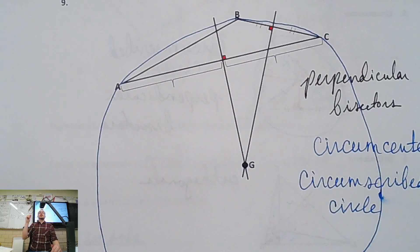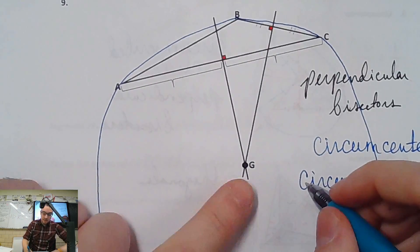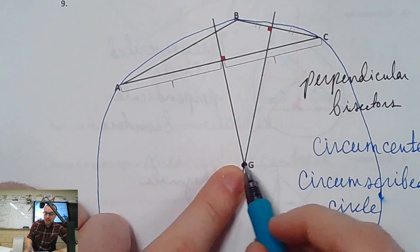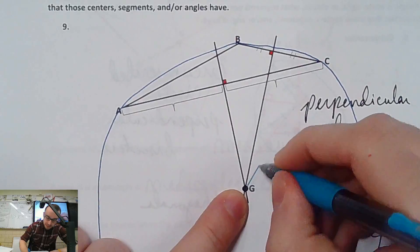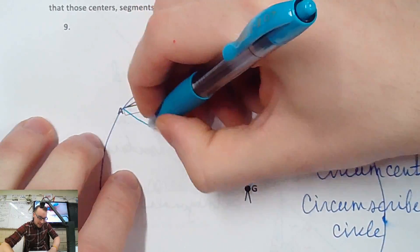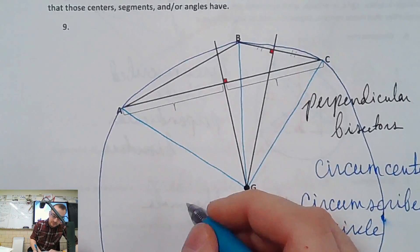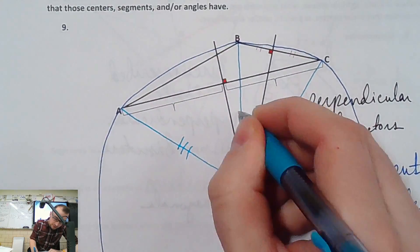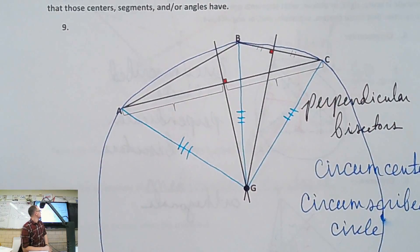If we have a circle, what must we have? Radii. That's the center — anywhere to the outside will be a radius, but which three am I interested in? G to C, G to B, and G to A. And if they're radii, what must be true about their lengths? They're congruent — all the same length.